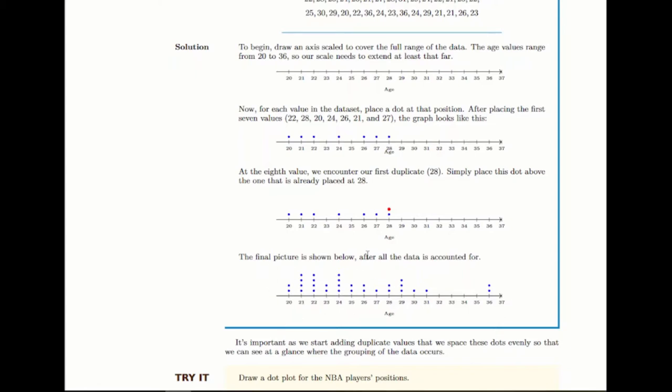What we can see here is basically where the data is clustered and where it's spread out. The ages are clustered between 21 and 24, and then it gets rarer as you go up. Then there are these separated data points out here at 36, a couple of unusually older players. These are what we call outliers, data points that are far away from the rest.